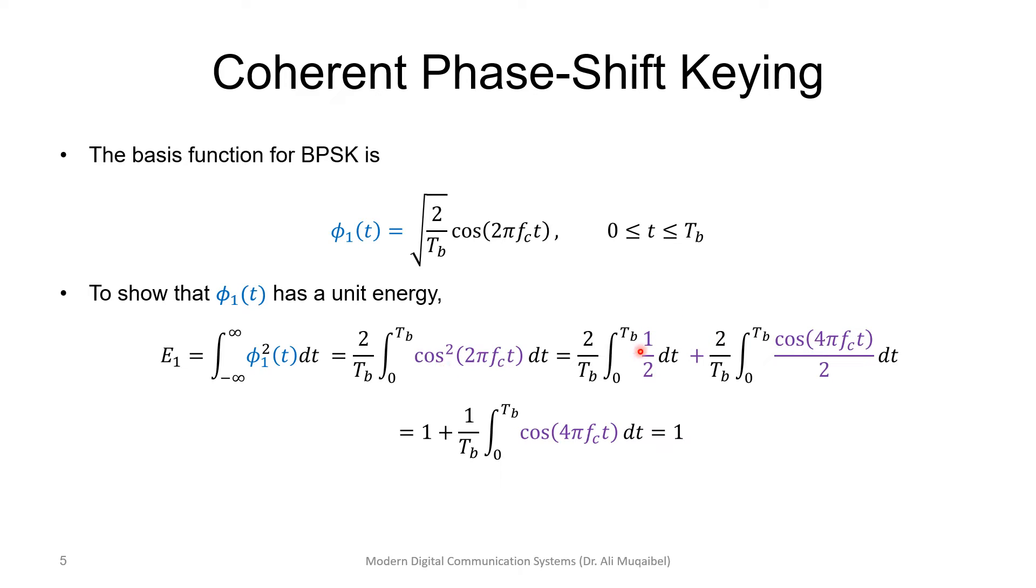So, we have 1 half plus cosine double the angle. And if you integrate, integration over two periods will give you 0. So, this is going to cancel out, and it's shown here, where the 2 cancels with the 2. So, this first expression would be Tb, so the Tb cancels with the Tb, and then we get,